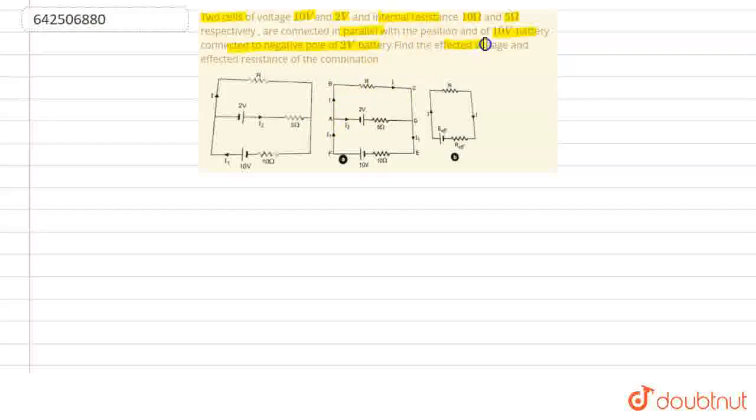So, here we have to find the effective voltage and effective resistance of the combination. We have to find the effective voltage and effective resistance of the combination of both these cells.